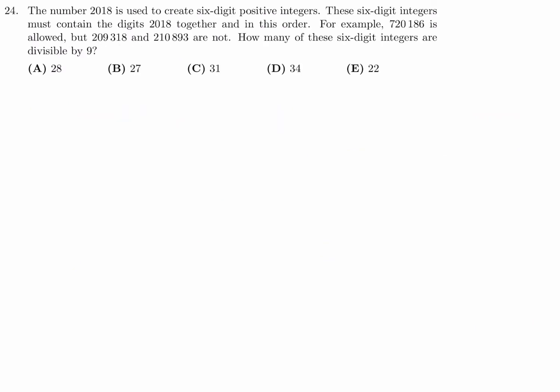The number 2018 is used to create 6 digit positive integers. These 6 digit integers must contain the digits 2, 0, 1, 8 together and in this order. For example, 720186 is allowed, but 209318 and 210893 are not. How many of these 6 digit integers are divisible by 9?